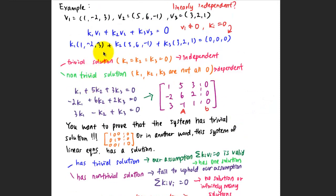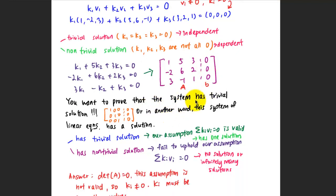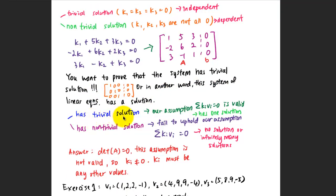Consider the previous example: substitute the vectors into the corresponding equations and put them into augmented matrix form. Since the right-hand side is a zero vector, the augmented column will be all zeros. You want to prove the system has a trivial solution, so when you row-reduce to reduced row echelon form, you should get k1=0, k2=0, and k3=0. This means the system of linear equations has a unique solution, confirming the assumption that the sum of k·v equals zero is valid.